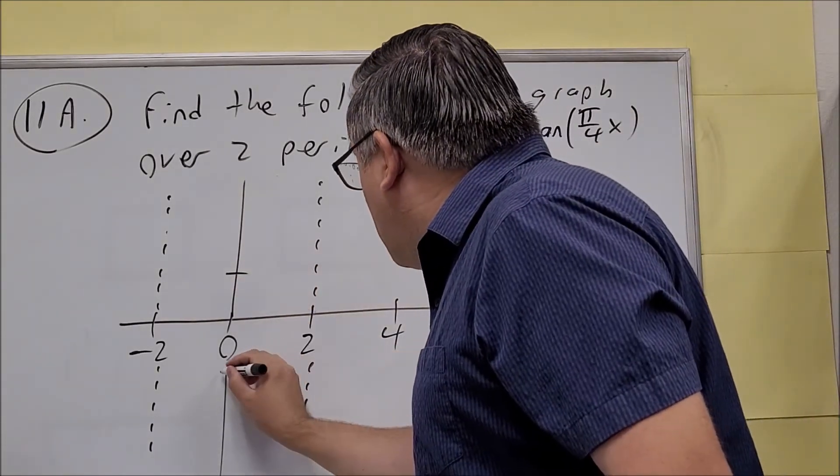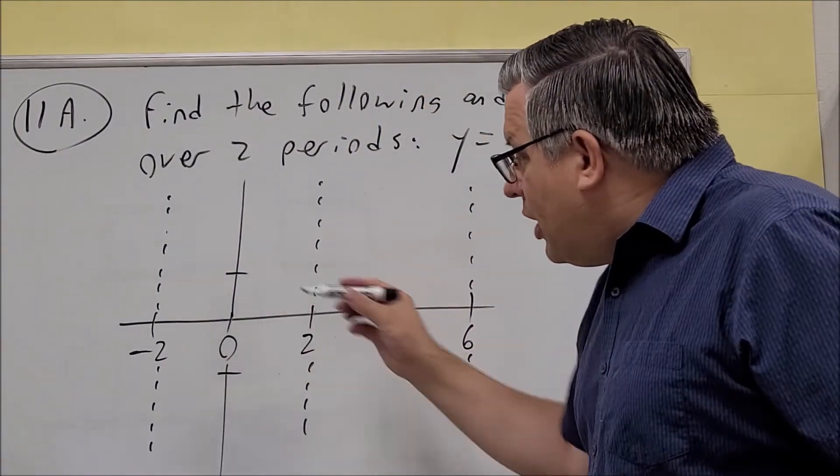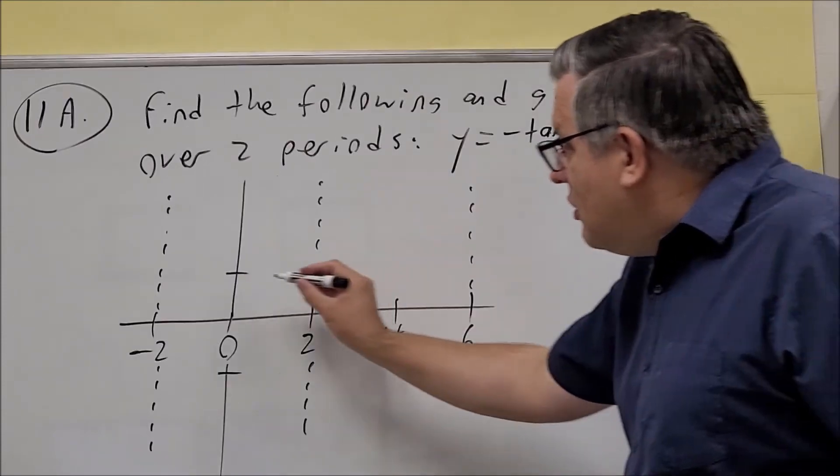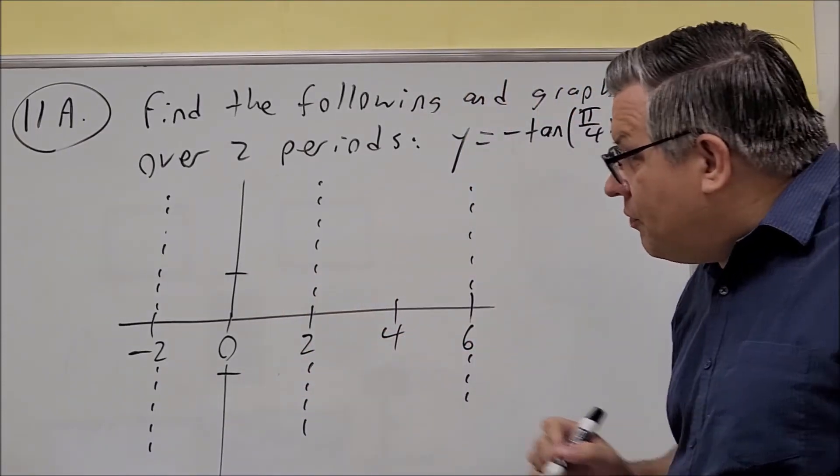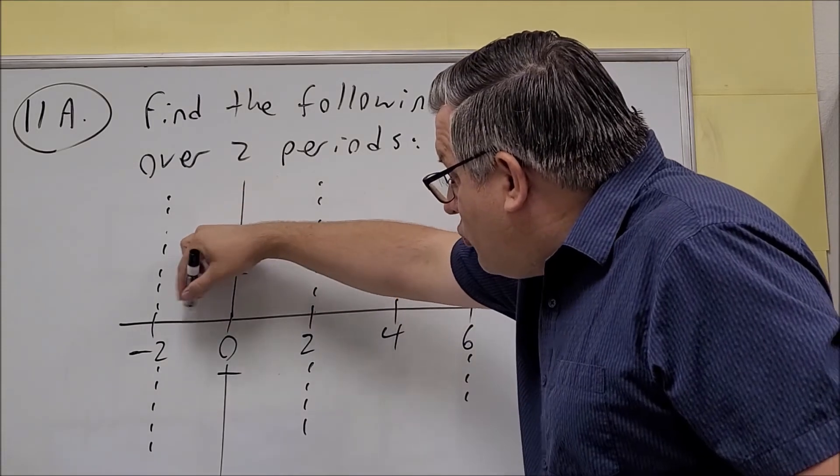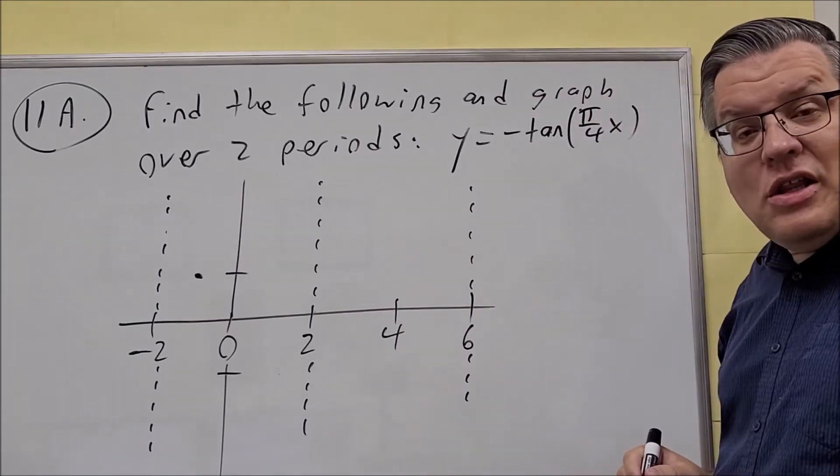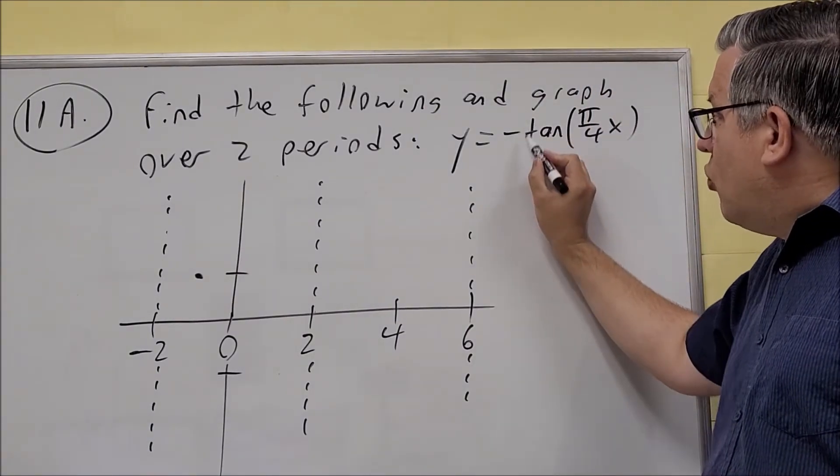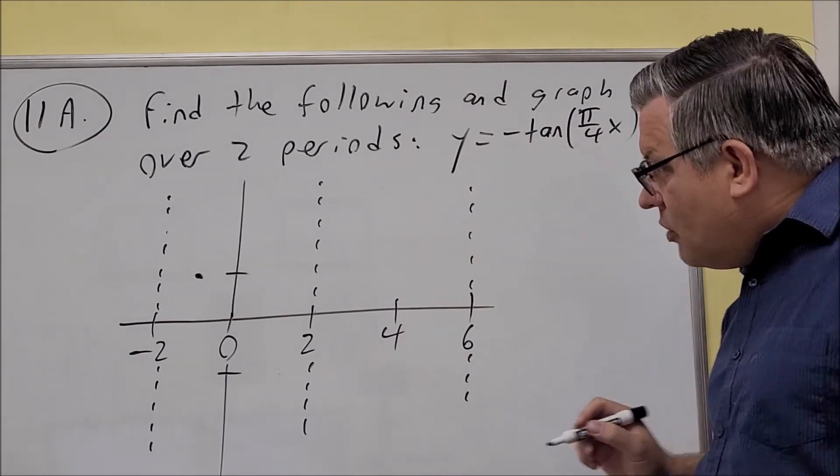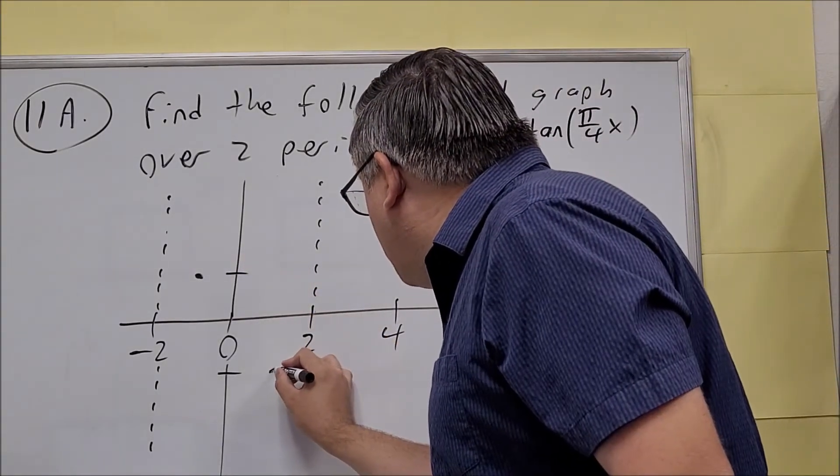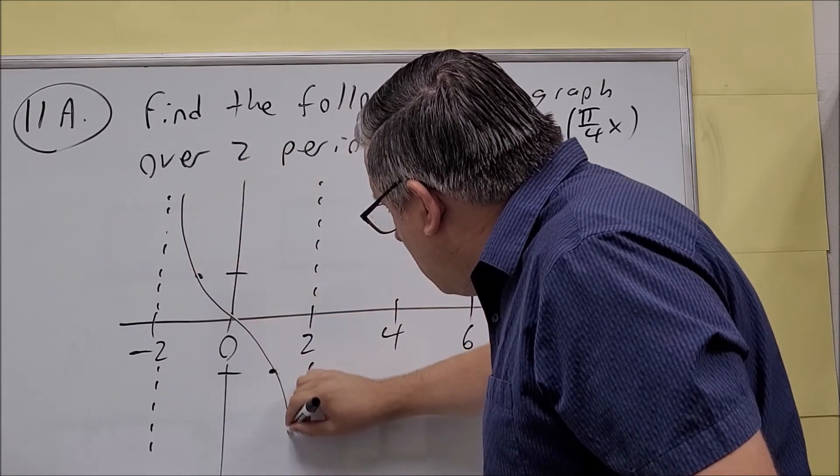Now I mentioned there are no amplitudes on a graph like this, but the points it crosses would be at 1 and negative 1. Halfway between 0 and negative 2, the graph hits that point because there's a 1 in front of the negative. So the graph is going to look like this.